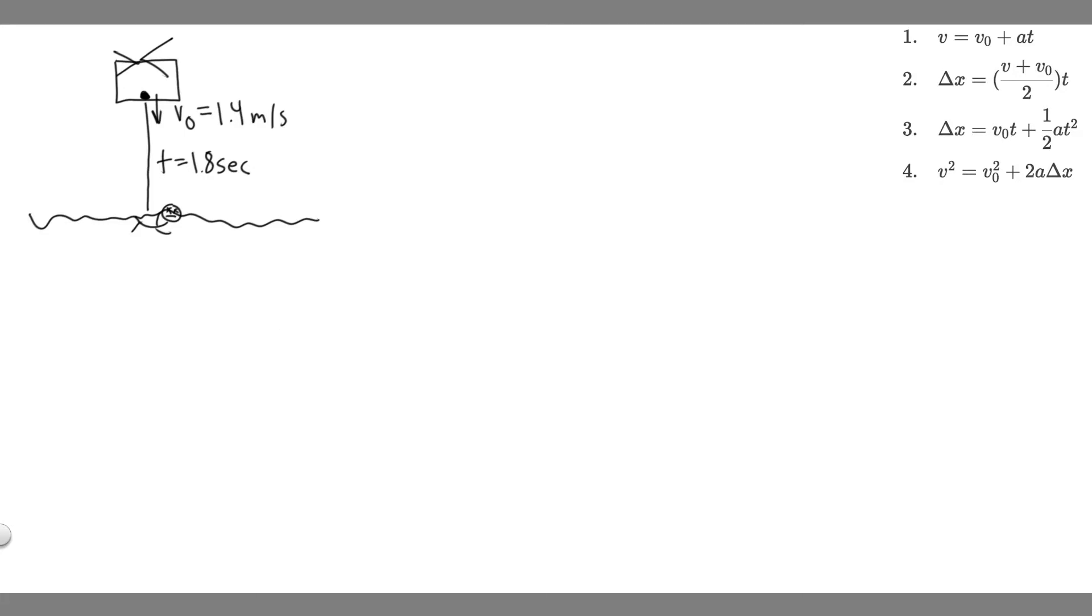In this problem, we're told a rescue helicopter is hovering over a person whose boat has sunk. One of the rescuers throws a life preserver straight down to the victim with an initial velocity of 1.4 meters per second and observes that it takes 1.8 seconds to reach the water. Part A asks us to list the knowns in this problem, and Part B asks how high above the water was the preserver released.